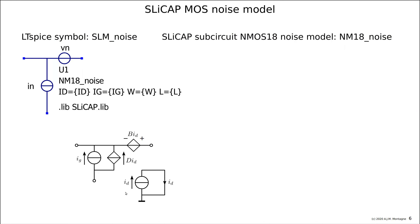Inside the model, we generate the drain current noise ID — this is related to the inversion coefficient and the drain current, using parameters like ID, W, and L. We calculate the drain current noise as the intrinsic noise source. Then we do the transformation: the drain current is multiplied by D times ID into a current source in parallel with the input, and it is translated into B times ID — a voltage source in series with the input. Because both originate from one source, both sources are correlated.